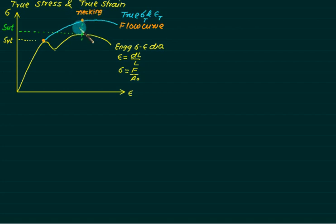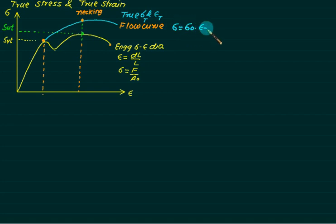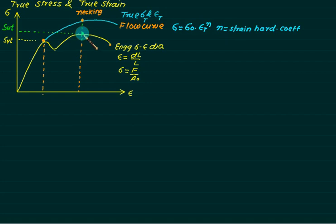After SUT, necking will start — this is the necking point. At SUT, necking forms, and once necking forms, there is a chance of fracture. So we have fracture strength here. This region is plastic deformation. The flow curve equation is: σ = σ₀ · εₜⁿ, where σ₀ is the flow constant and n is the strain hardening coefficient.